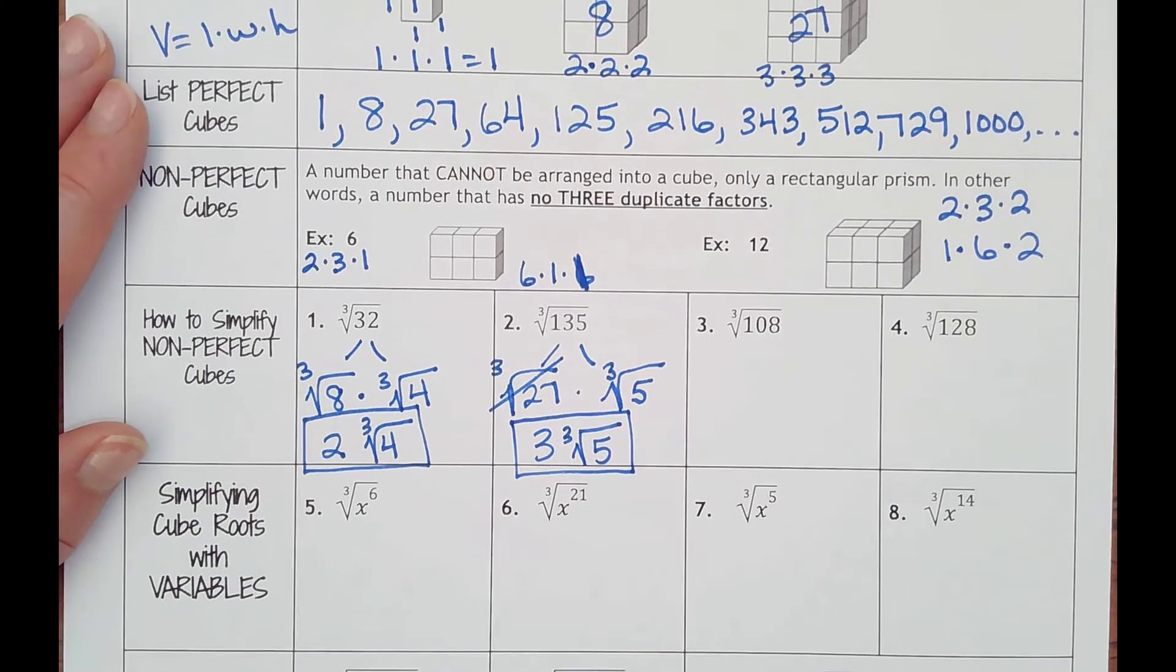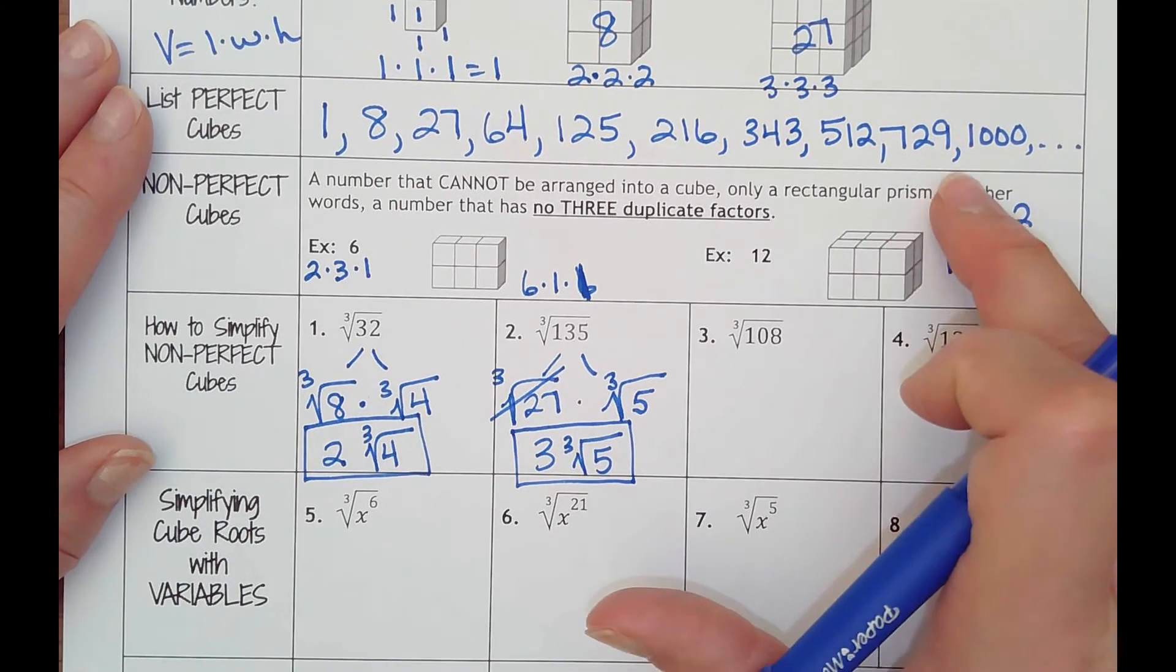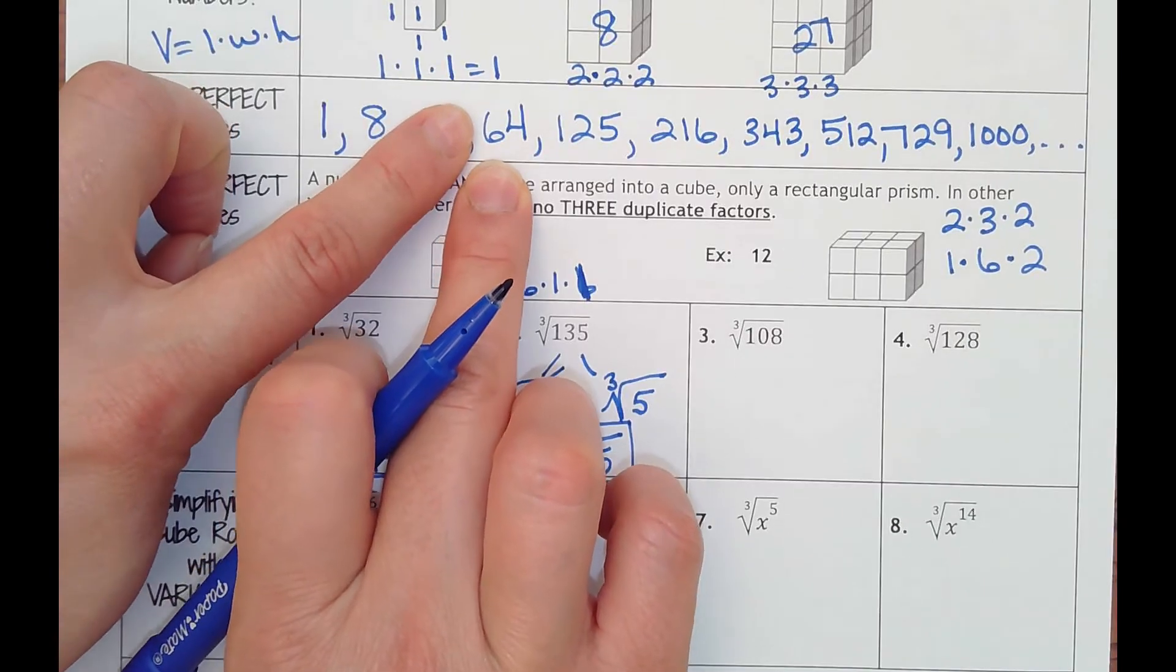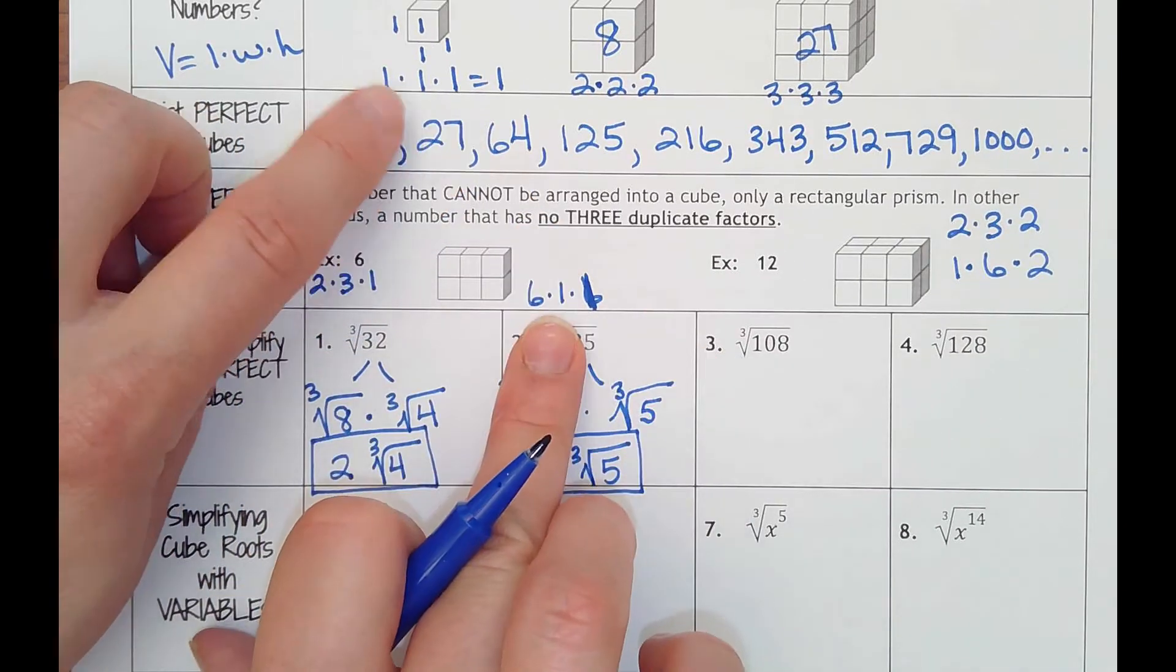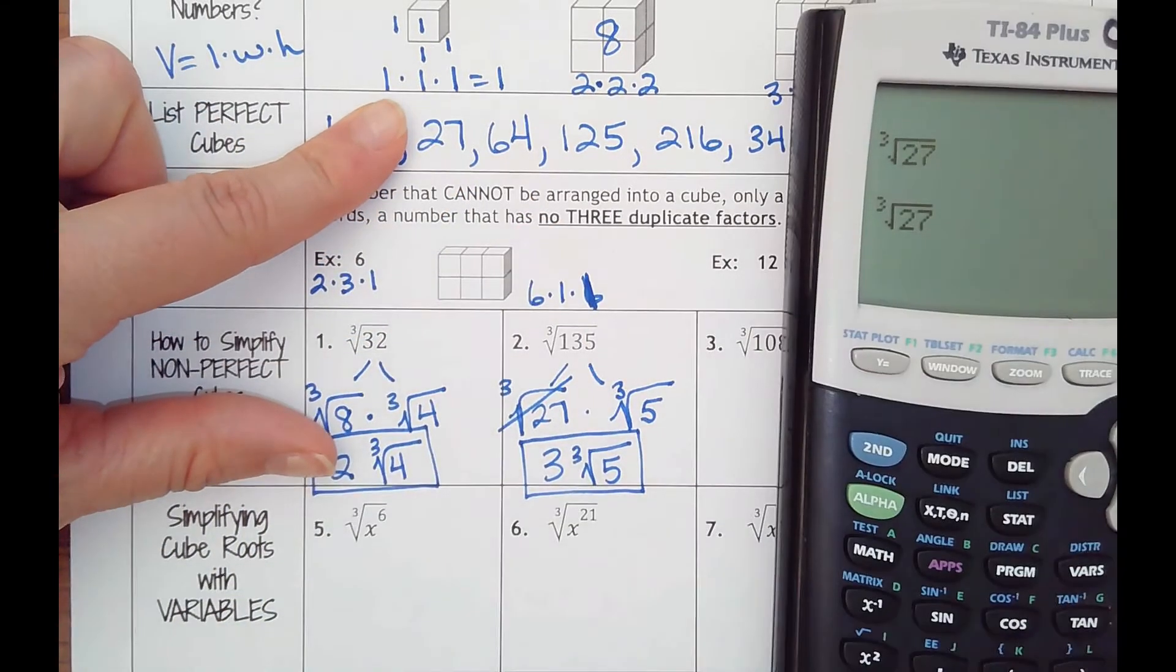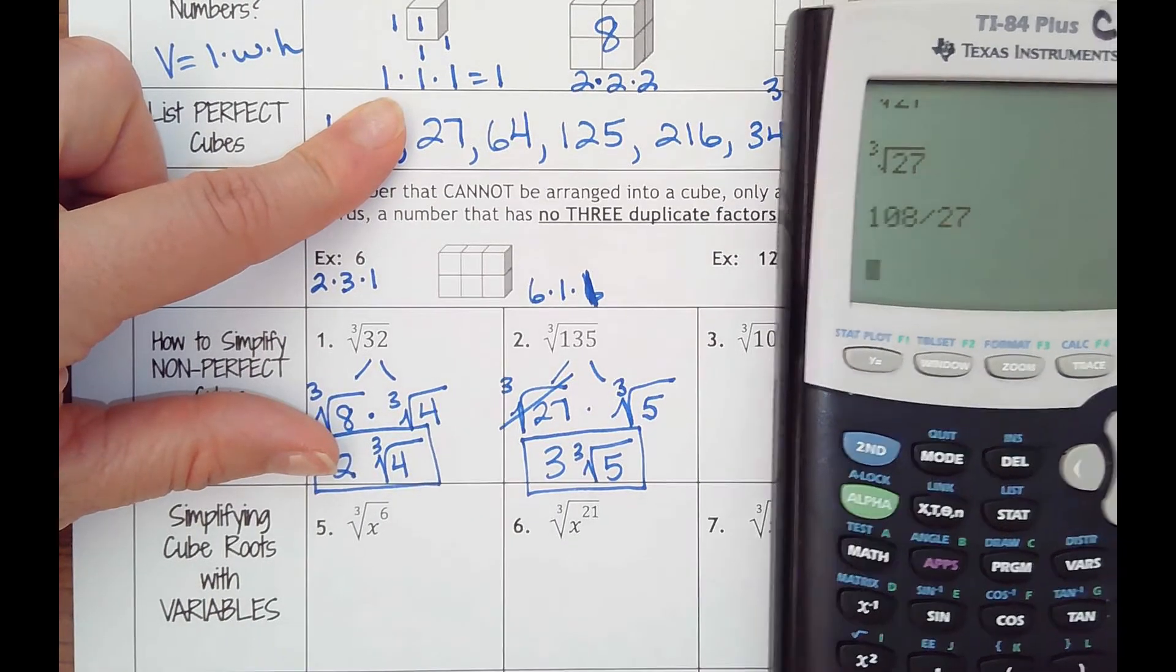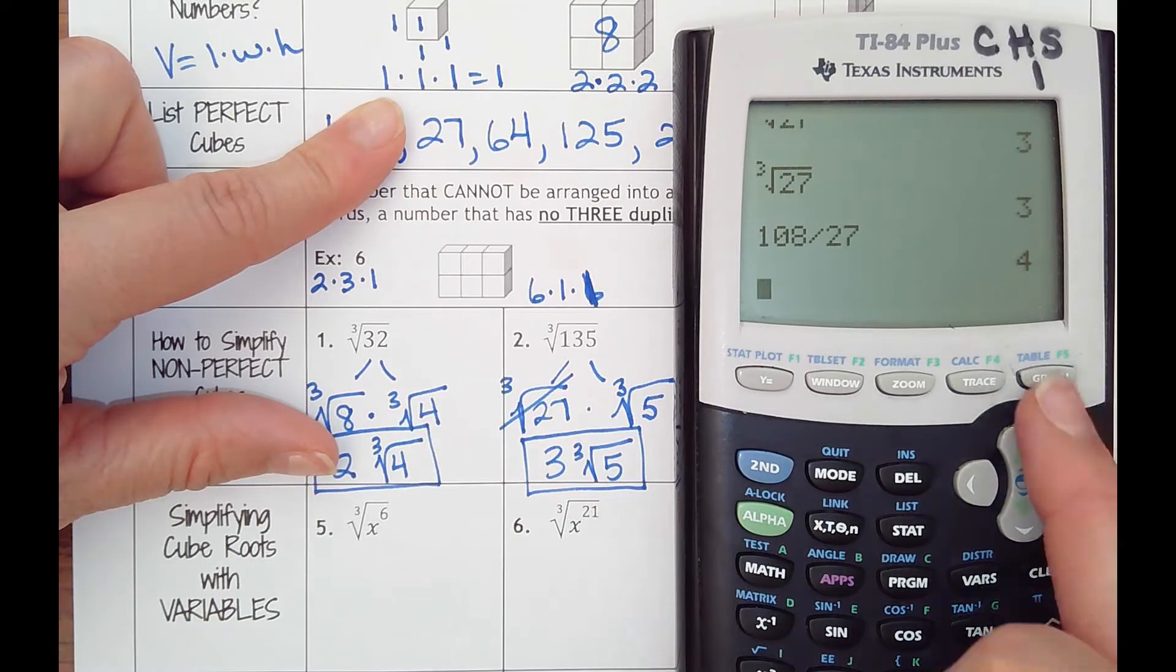So this is really a three and I would have cube root of five left over. Number three, I've got cube root of 108. Start from the top. 64, we already said double would be 128, so that's too big. 27, I think.